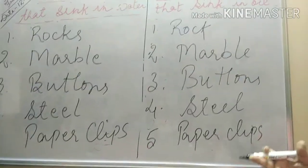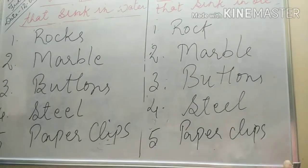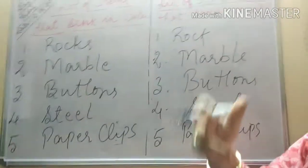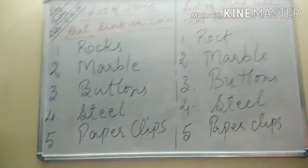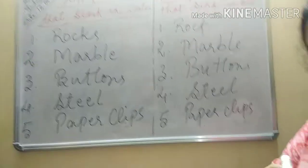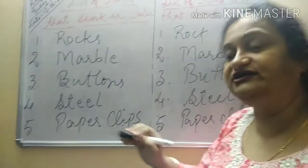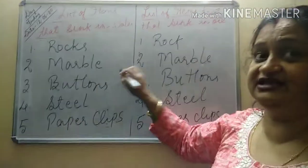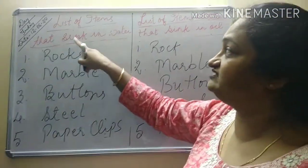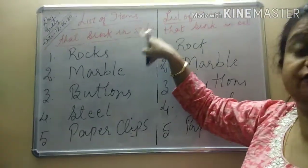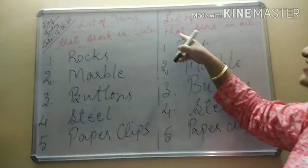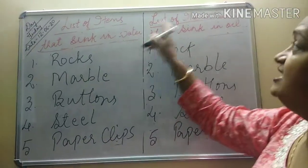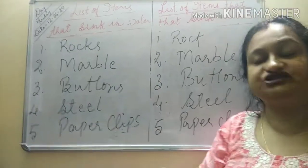So the things which sink in water will definitely sink in oil. The reason is water is much more denser than oil, or on the other hand, oil is much lesser denser than water. I hope children the things are now clear. I will be sending you an assignment as well which you can copy down. These are the two tables: list of items that float on water and float on oil, and list of items that sink in water and sink in oil.